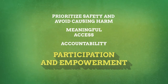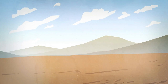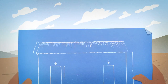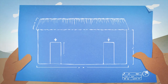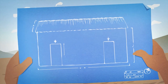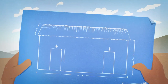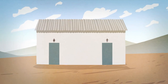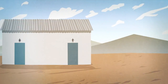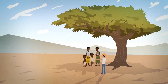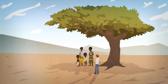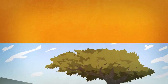Participation and empowerment. This is about ensuring that beneficiaries are actively involved, or even take full control of the humanitarian intervention. As well as receiving information, people in humanitarian crisis have the right to participate in the decisions that affect them.